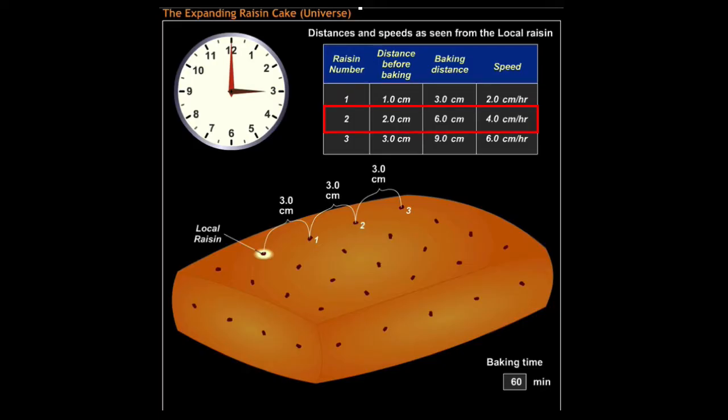The distance to raisin two increased from two centimeters to six centimeters, so it was moving away from the local raisin at a speed of four centimeters per hour. The distance to raisin three increased from three centimeters to nine centimeters, giving it a speed of six centimeters per hour away from the local raisin.